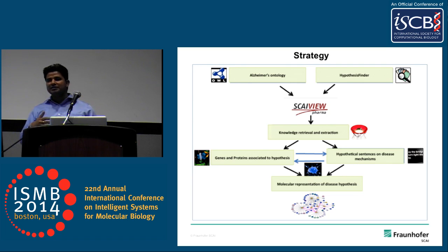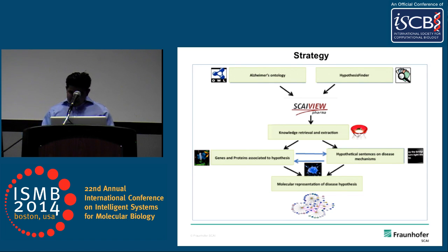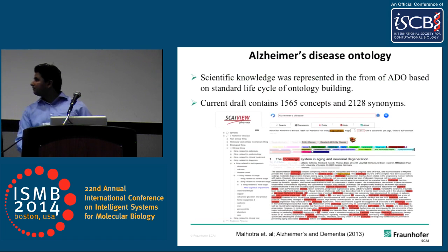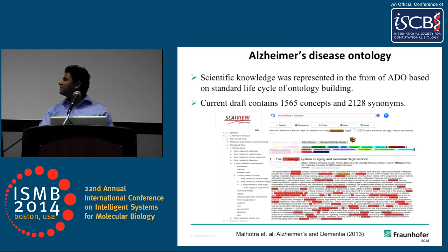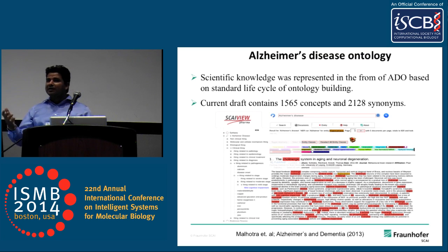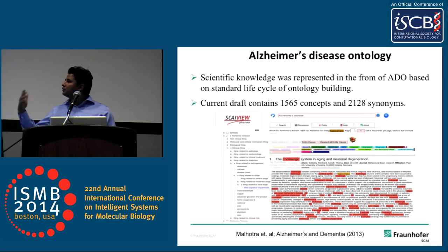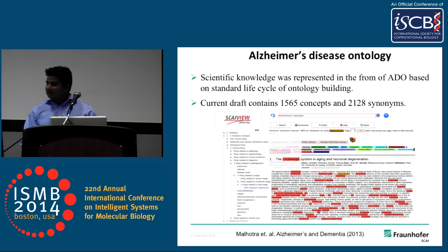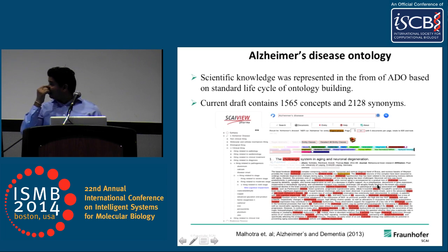Zooming into each step: the Alzheimer's disease ontology currently has around 1,600 concepts with around 1,200 synonyms. By synonym in ontology, I mean that some people write 'amyloid precursor protein,' others write 'APP,' and APP itself can be written in 40 different forms in the literature — we tried to cover all of these. This is an example showing how this ontology works and how it annotates and retrieves information within SkyView.